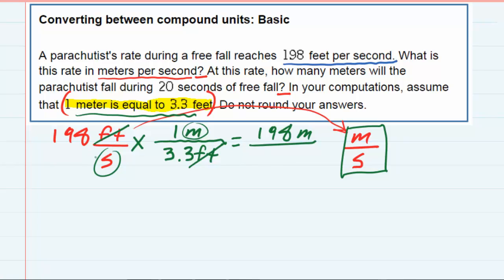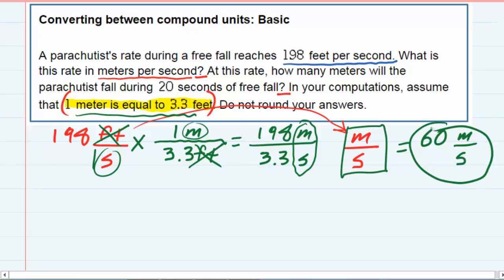The feet have been canceled. So we've got the meters per second that we wanted. We just need to simplify the 198 divided by 3.3, which works out nicely at 60 meters per second. So we have answered the first question, 60 meters per second.